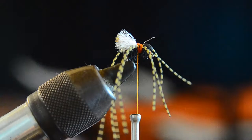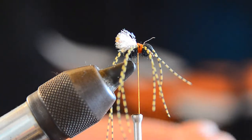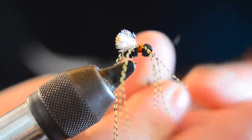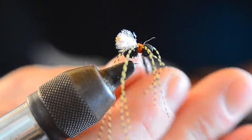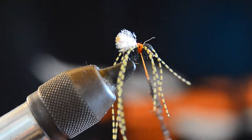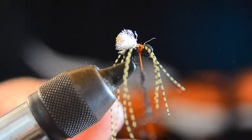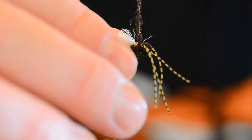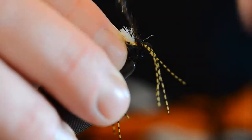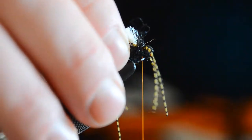Just to finish the fly, back to our black ice dub. We just want to basically dub enough to cover our thread work, kind of bury all that thread. Pull those rubber legs out of the way when I do this.